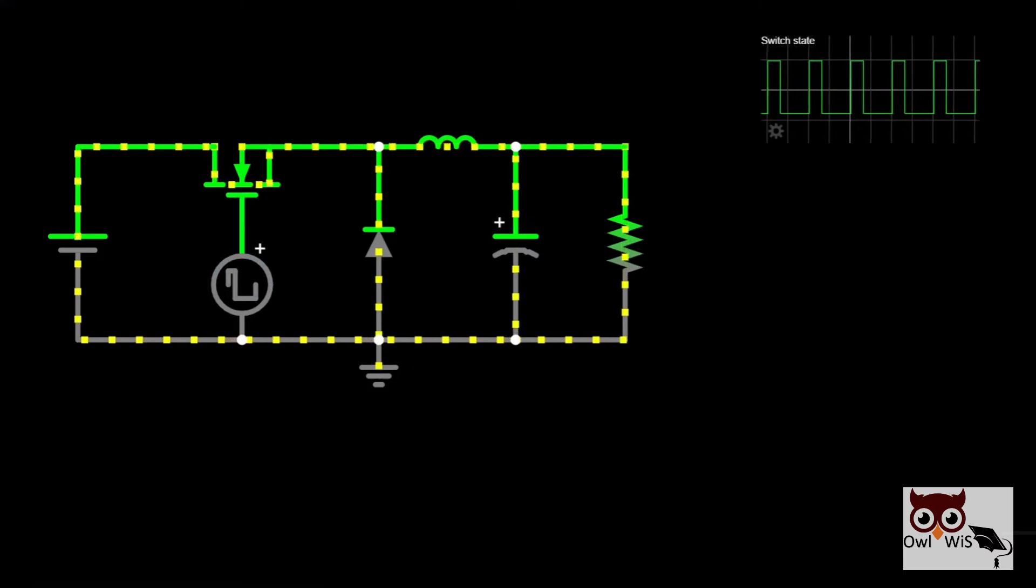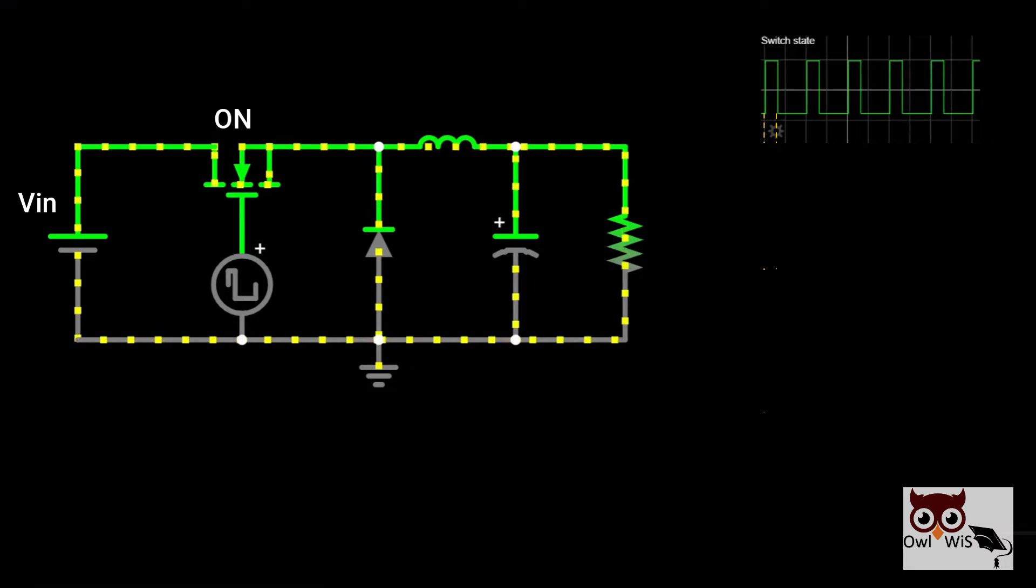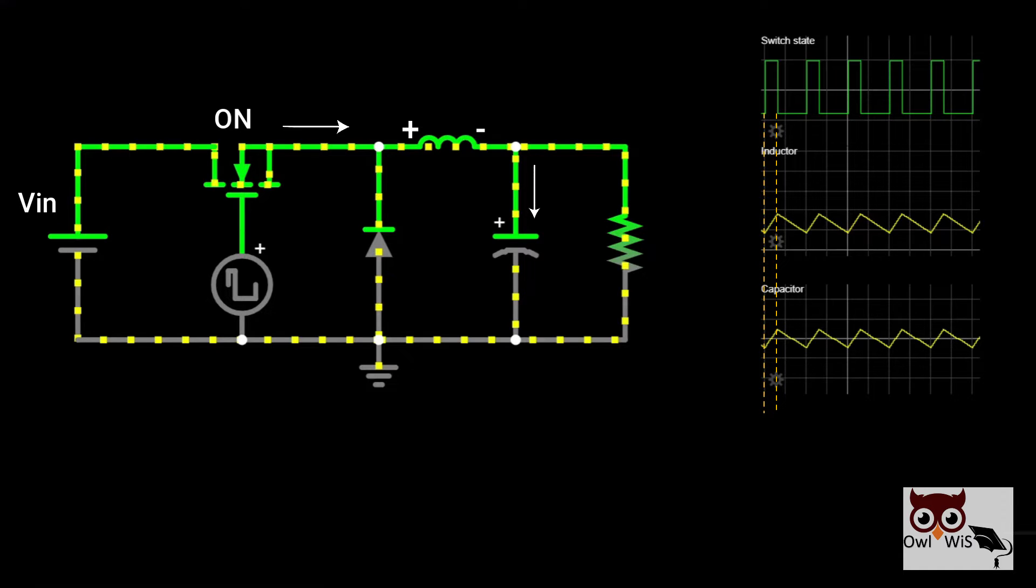When the transistor switch is closed (on state), input voltage is applied directly across the inductor. Inductor current increases and stores energy in its magnetic field. The current flows through the capacitor as well and the capacitor stores the charge. The voltage across the capacitor appears across the load. Diode is reverse biased, blocking current flow.